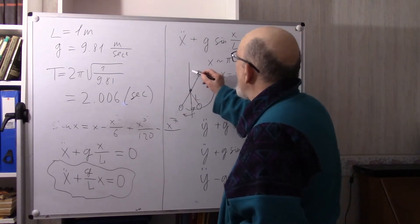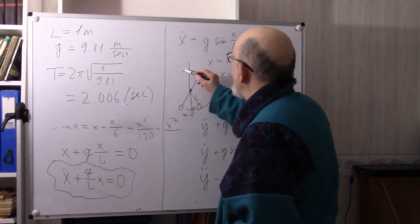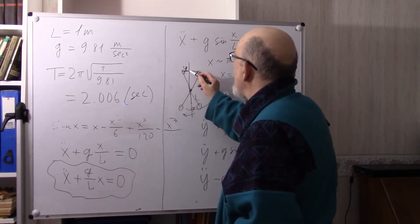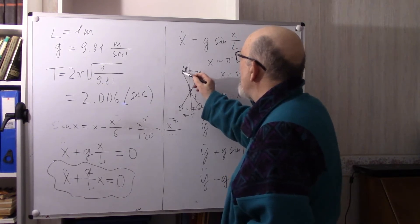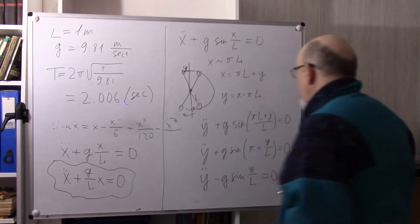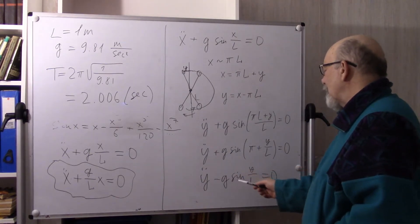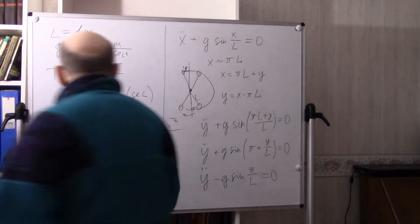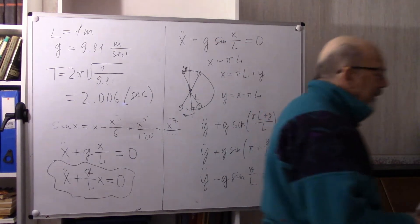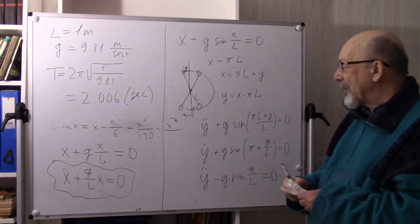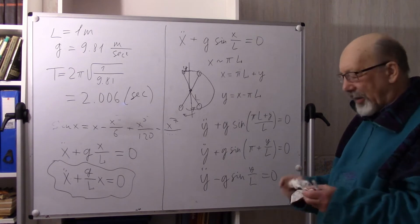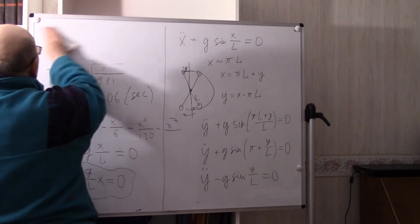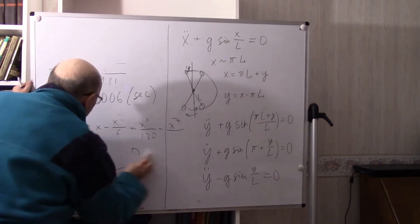So the equation for motion near the upright position is Y double-dot minus G sine(Y/L) equals 0. This equation is no easier to solve exactly than the previous one, but let us again apply linearization.